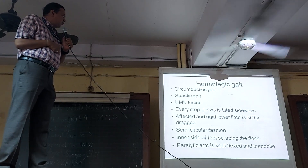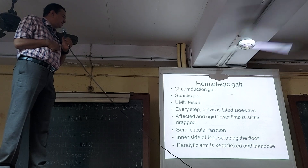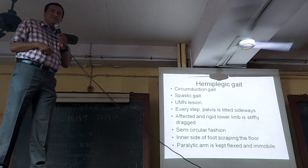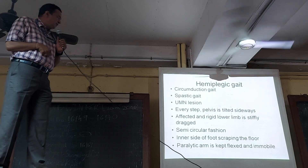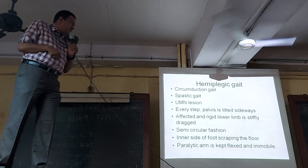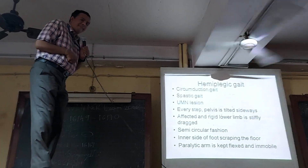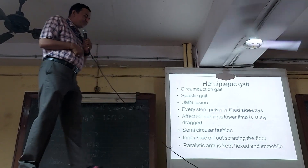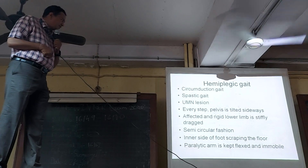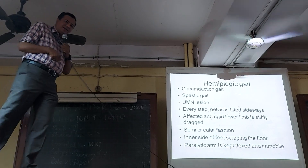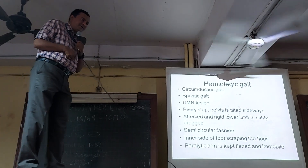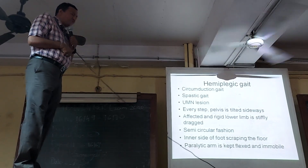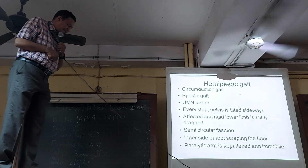Now the person has to walk. This is the spastic gait on one side — he starts walking, and he cramps his lower limb. In a semicircular manner he is doing it, and the inner side of the foot is scraping the floor.